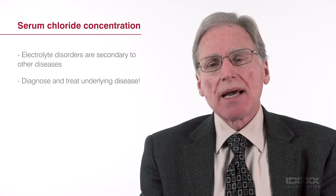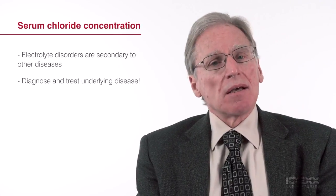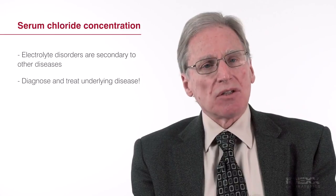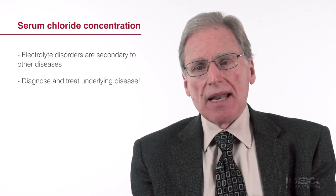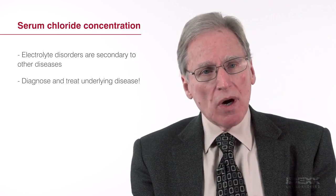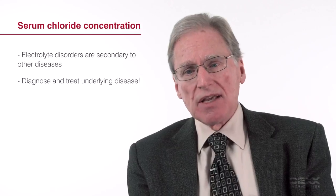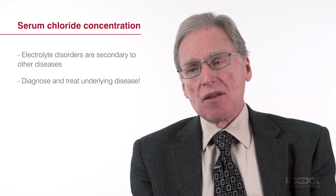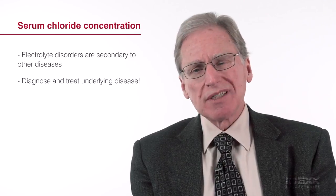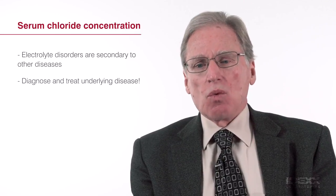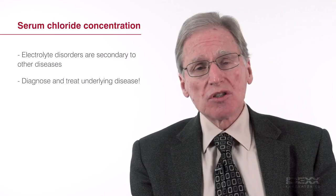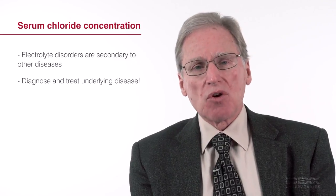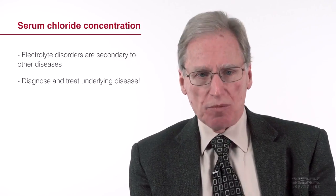Let's look at the serum chloride concentration. Chloride and bicarbonate are the only important reabsorbable anions in tubular fluid, and abnormalities in one often create abnormalities in the other. The normal ratio of sodium to chloride in the blood, or extracellular fluid, is about 1.3 to 1. Whenever an animal loses or gains equal amounts of sodium and chloride, it will disturb that relationship of 1.3 to 1.